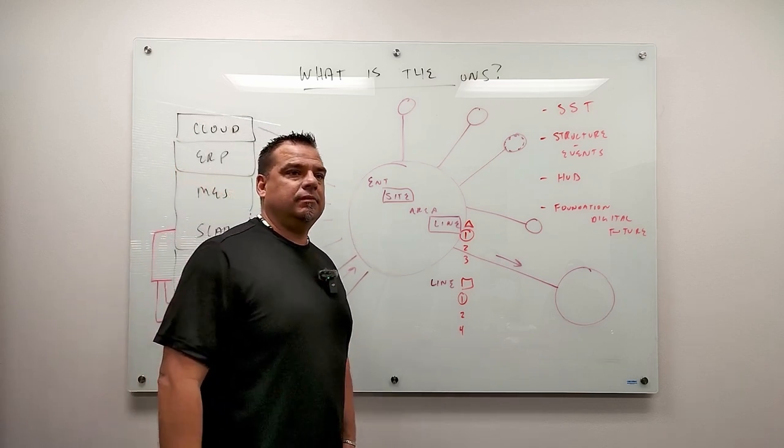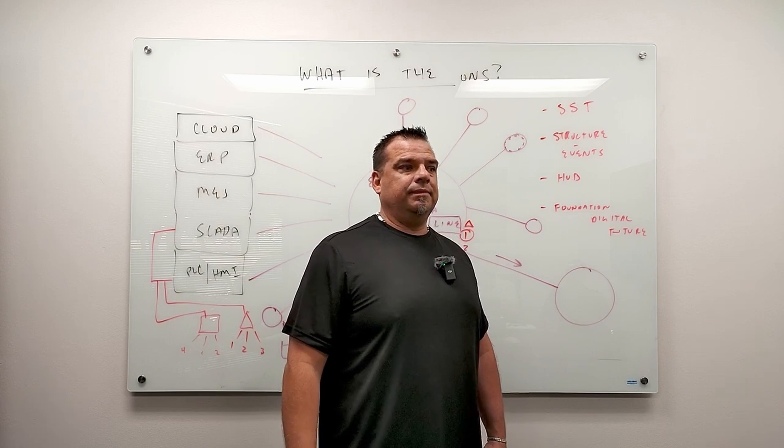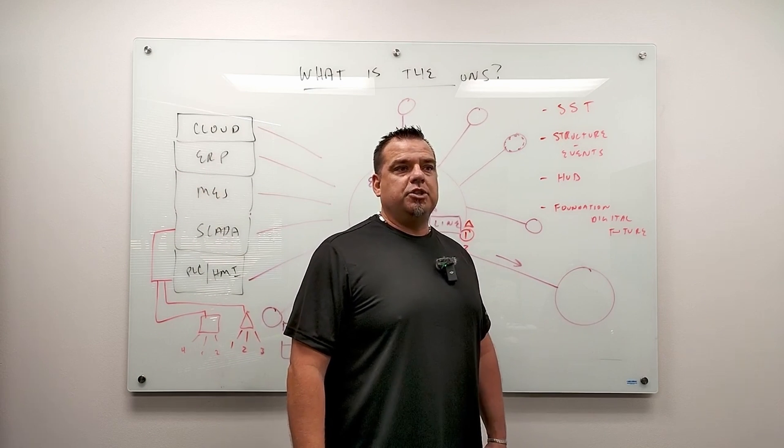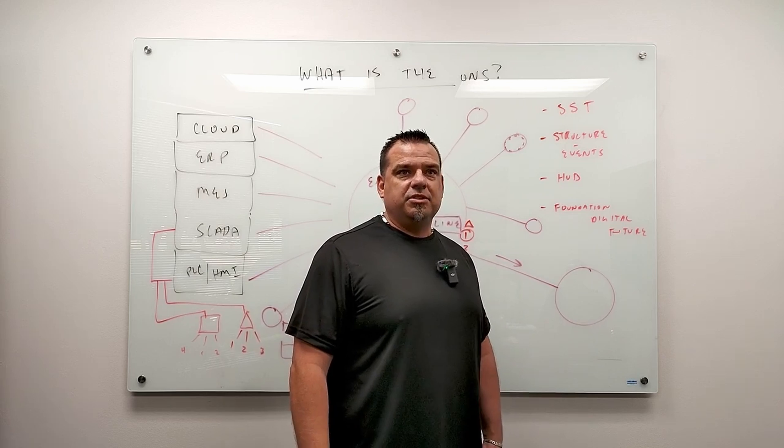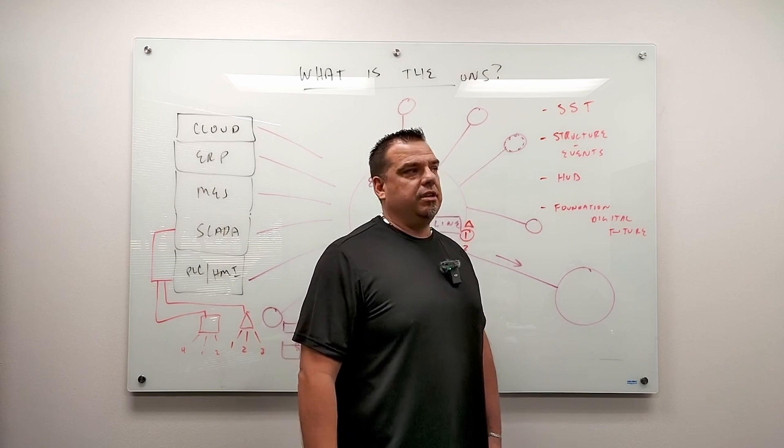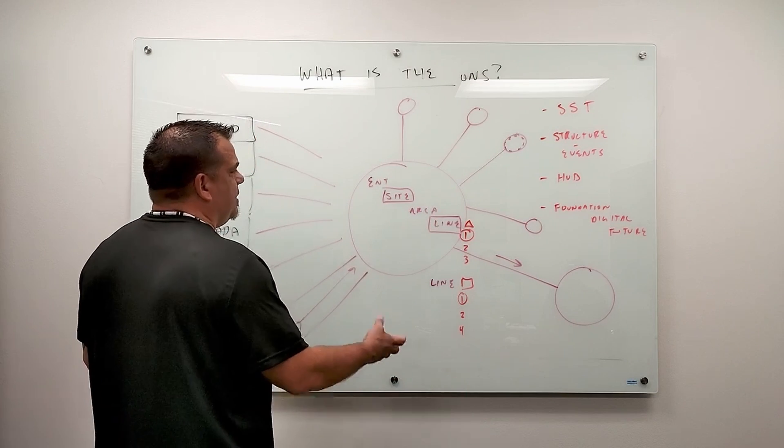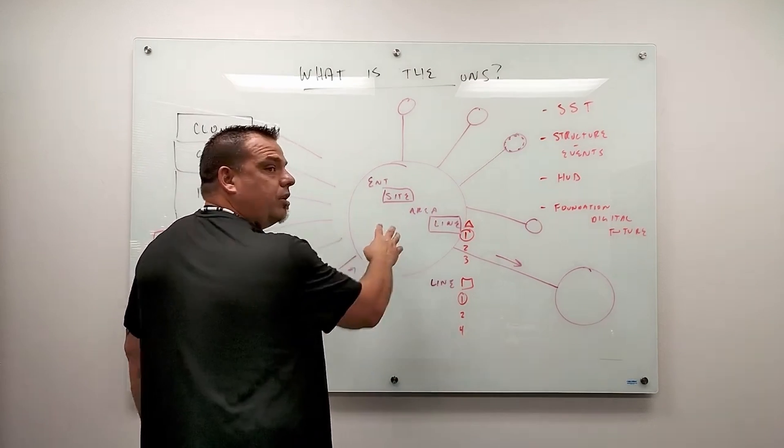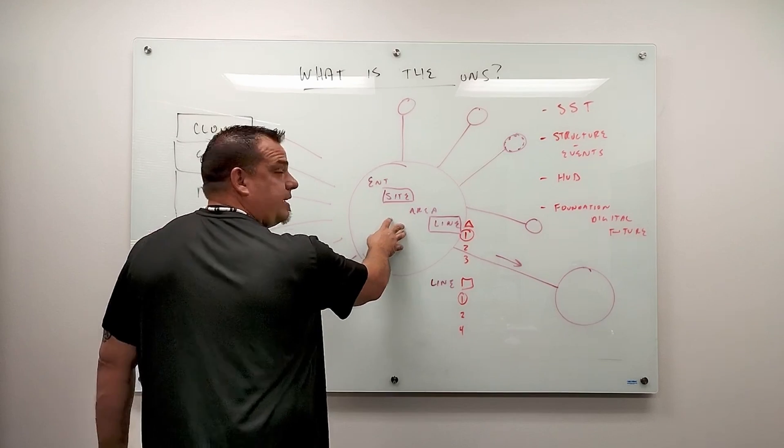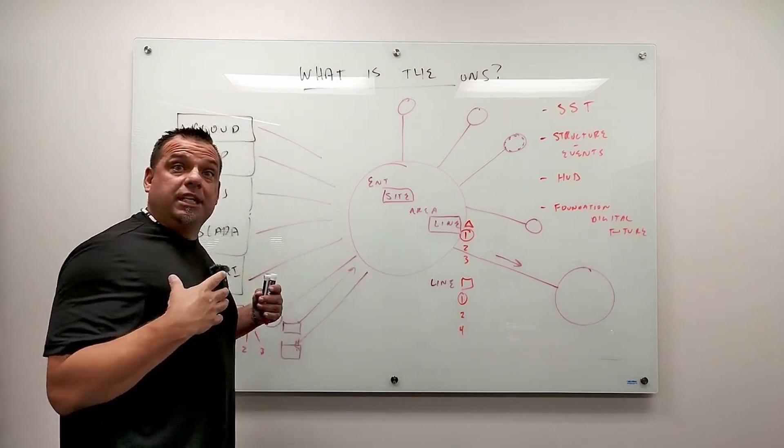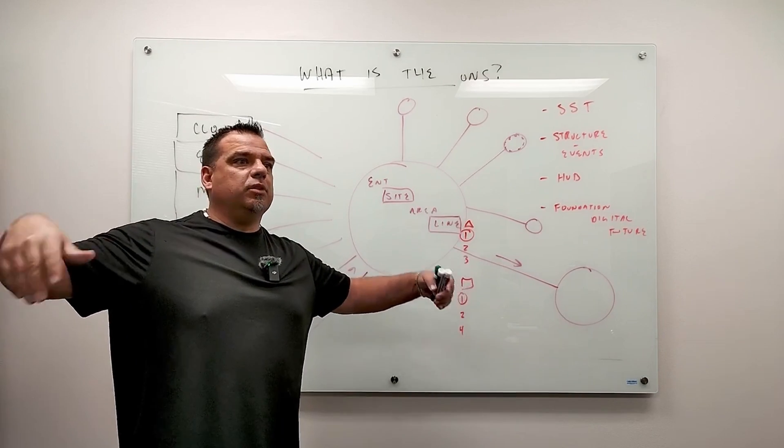What software do I need to build the unified namespace? A software that meets your minimal technical requirements, which is MQTT and Sparkplug B with an engineering user interface. I'll give you the most common example. The most common example is this is a standalone broker. This is EMQX. We prefer the EMQX broker. It is the most scalable, most cost efficient, and it has 30% more throughput than any other broker on the market.